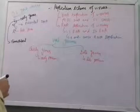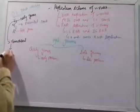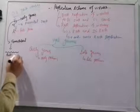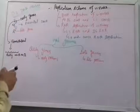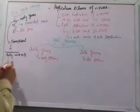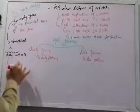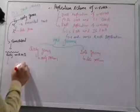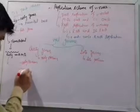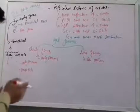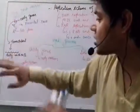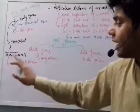The early genes are transcribed and they produce early messenger RNA. This early messenger RNA is then translated to produce early proteins. We can also call these early proteins DNA polymerase — in short form, DNA poly.